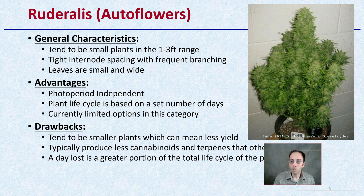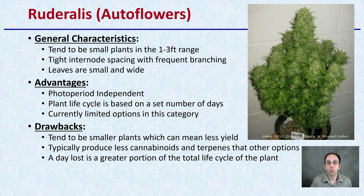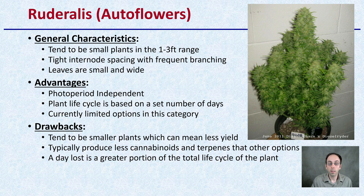Ruderalis are the autoflowers — where things get more interesting. They tend to be very small plants, only 1 to 3 feet, with tight internode spacing and frequent branching with small, wide leaves. The advantage is they're photoperiod-independent, meaning they flower based on a set number of days rather than duration of light exposure. However, there are currently some limited options in this category. The drawbacks are smaller plant size meaning less yield, typically less cannabinoids and terpenes, and a day lost is a greater portion of their total life cycle — unlike photoperiod-dependent plants where you can delay the flip to flower.